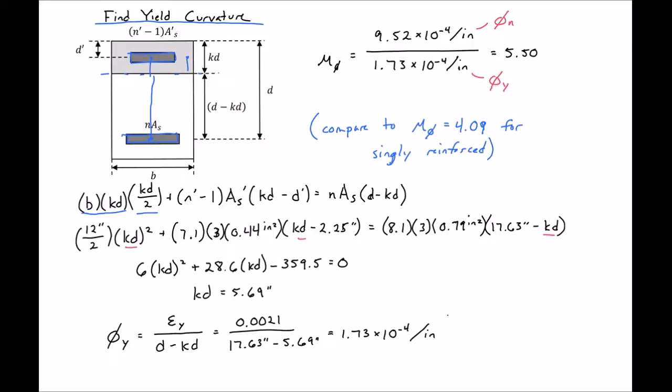And we can compare this to a curvature ductility of 4.09 for our singly reinforced section. So you can see that adding compression reinforcement allows us to increase our curvature ductility.